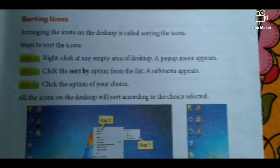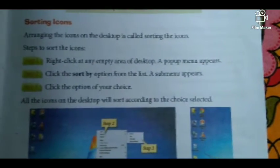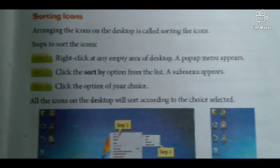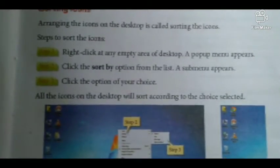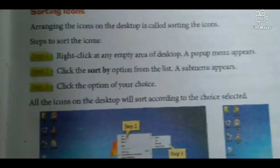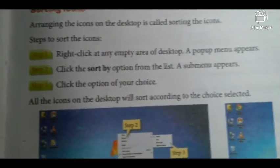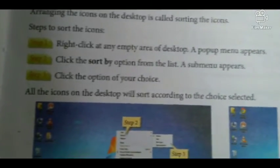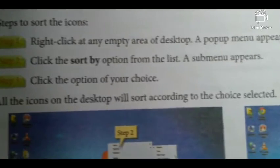Sorting icons. Arranging the icons on the desktop is called sorting the icons. Steps to sort the icons: Step 1 - Right-click at any empty area of the desktop. A pop-up menu appears. Step 2 - Click the sort option from the list. A submenu appears.